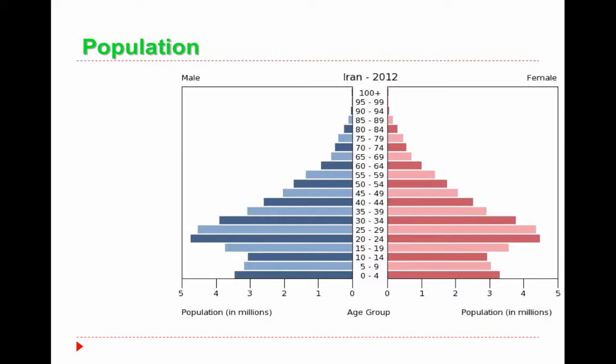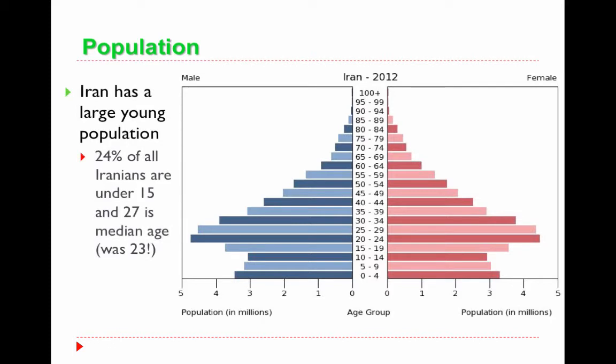The population is very important — this is something I'd expect to see on the AP test. Iran is very young: 24% of all Iranians are under 15, and the median age is 27, up from 23 in recent years. Of all six countries we study, Iran has the youngest population. Shortly after the Iranian Revolution of 1979, the government encouraged births to produce soldiers. They tried to reverse this as population spiked, but have since encouraged large families again. The government itself is made up mostly of people from the older generation.